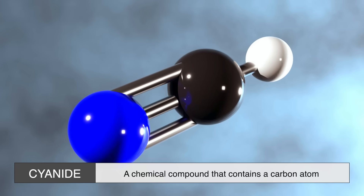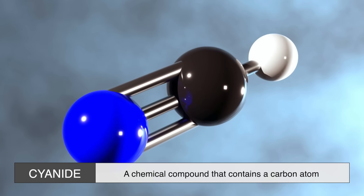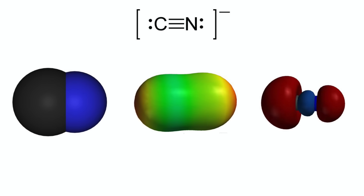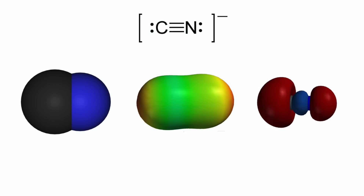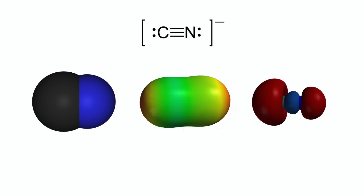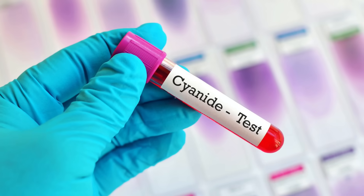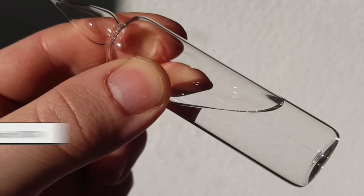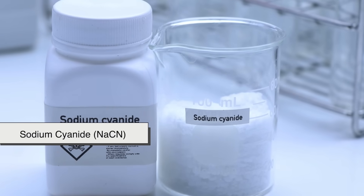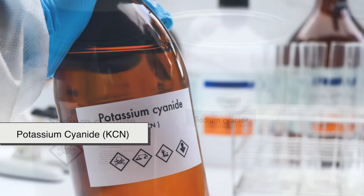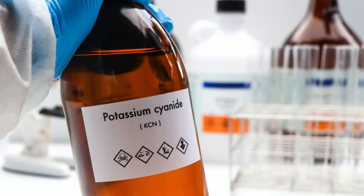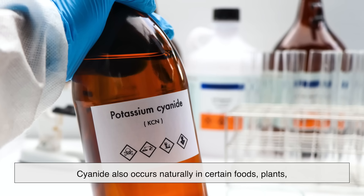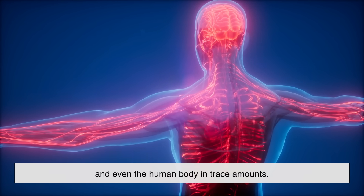At its core, cyanide is a chemical compound that contains a carbon atom triple bonded to a nitrogen atom. This small but powerful structure is what makes it so reactive and, in many cases, so dangerous. Cyanide exists in different forms, both natural and synthetic. It can be a gas, such as hydrogen cyanide, or a solid, like sodium cyanide and potassium cyanide. These compounds are highly toxic, but cyanide also occurs naturally in certain foods, plants, and even the human body in trace amounts.